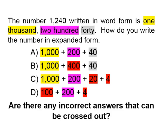Let's look at answer choice A. Is one thousand highlighted in yellow? Yes. Two hundred highlighted in pink? Yes. Forty in gray? Yes. So A could possibly be our answer. Let's look at the other choices too. For B, one thousand is highlighted in yellow — yes, that is correct. But it says four hundred, and in our word form in the hundreds place we have two hundred. So four hundred is incorrect — we highlight that in red. Plus forty in gray — yes, forty is correct.